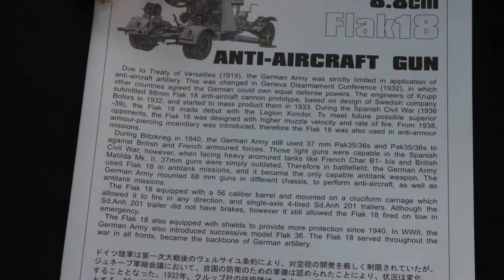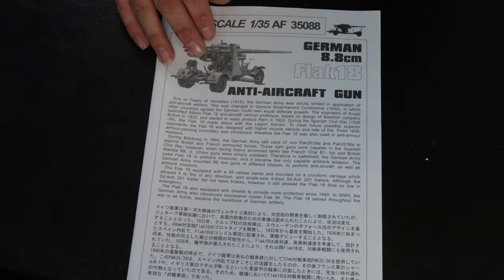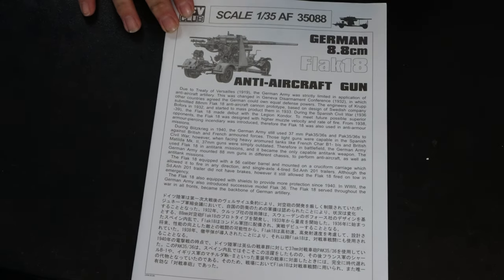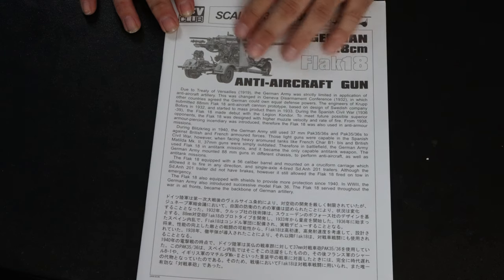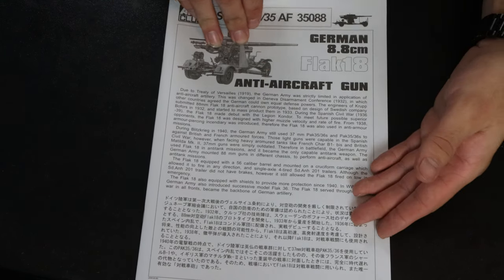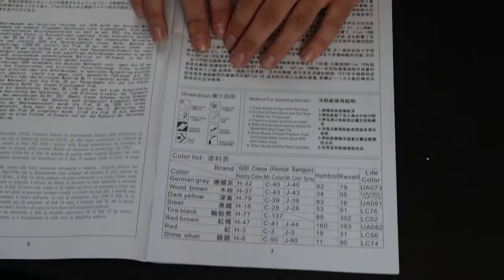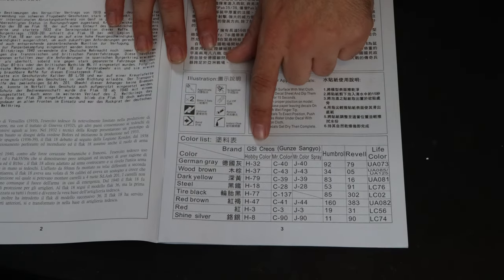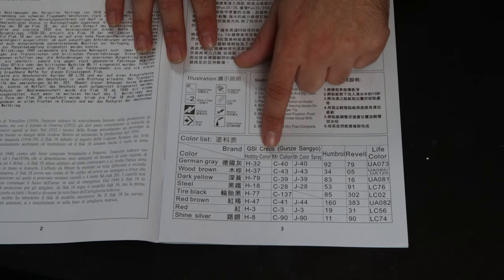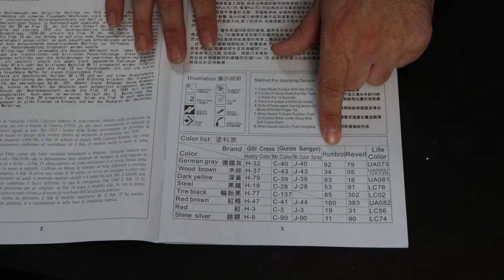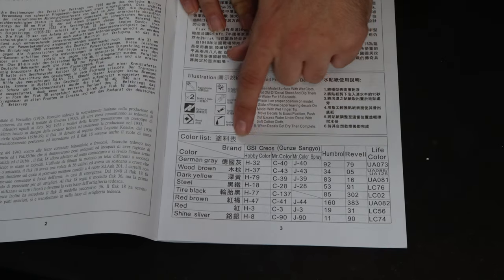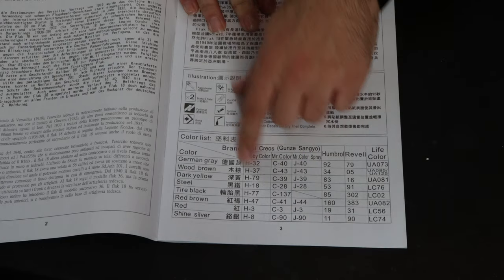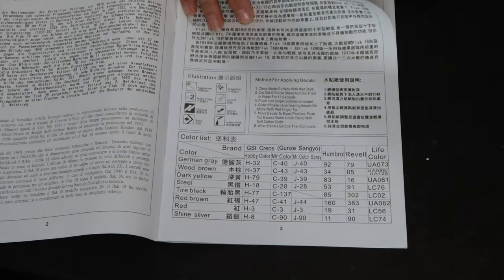Let me grab the instructions real quick and we'll take a look at that. Alright, so the instructions are in black and white, unfortunately. I wish more companies would start putting some color stuff in there, but this gives you a little bit of history of the Flak 18. They include color callouts for GSI, so Hobby Color, Mr. Color, Mr. Color Spray, as well as Humbrol, Revell, and Life Color. I usually use Mr. Color, so I'll use that. Not many colors needed, which I wouldn't figure.